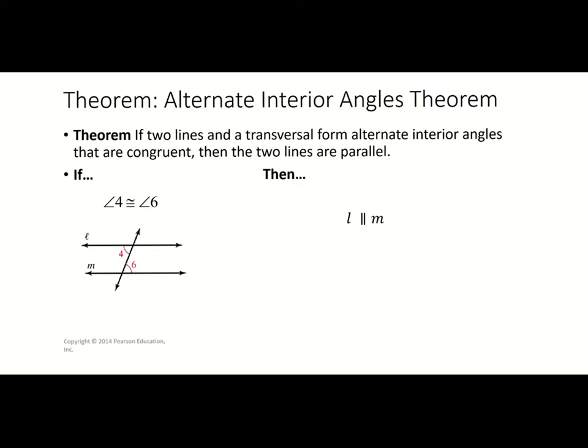Next we have the alternate interior angles theorem. This theorem — and we will look at this theorem and ones related to other angle measures and angle types — and then in the next section in 3-3, we'll look at the converse of these. It is important when we do a proof to make sure we have the right one: is it the theorem or the converse of the theorem? The alternate interior angles theorem says if two lines and a transversal form alternate interior angles that are congruent, then those two lines are parallel.